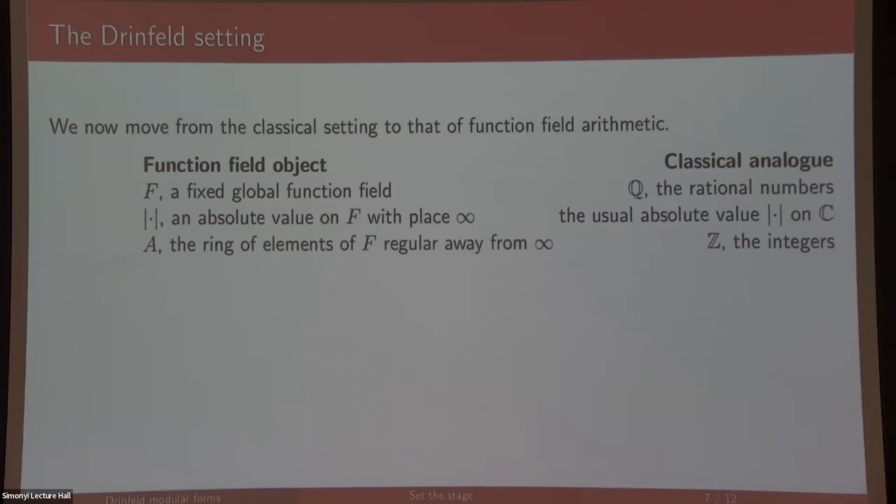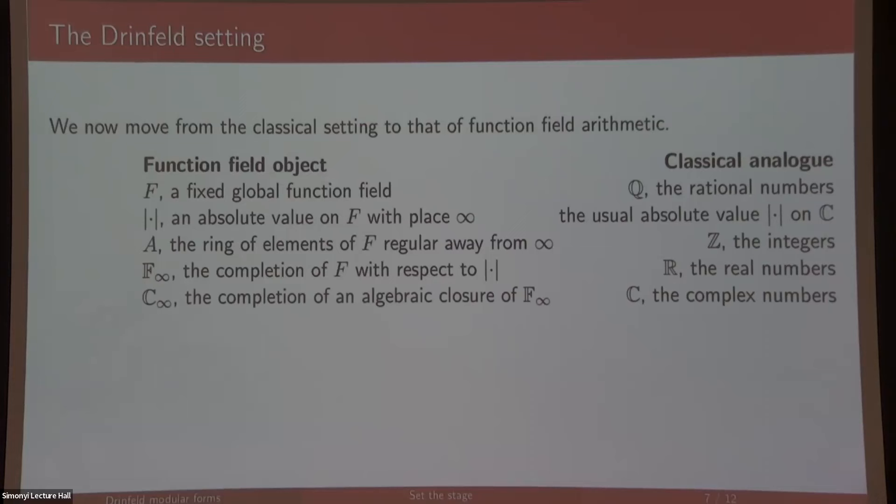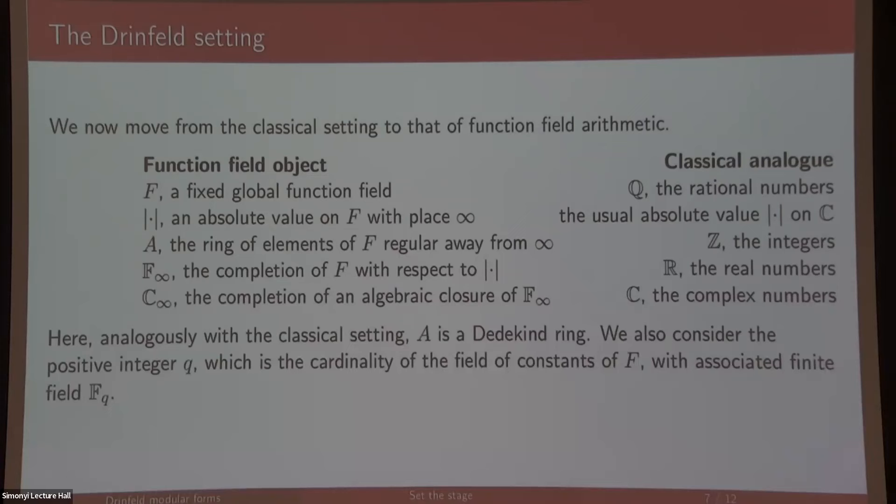We can complete F with respect to our absolute value, and the analog is the real numbers because when you complete the rationals you get the reals. You get the complex numbers—in the classical case you complete the real numbers. Here you have to take the algebraic closure and then take the completion again, but then it is algebraically closed once you do that. For a more concrete analogy, your integers are polynomials with coefficients in a finite field, your rationals would be rational functions with coefficients in a finite field, and your reals would be one-sided Laurent series, and complex numbers are algebraically closed after that.